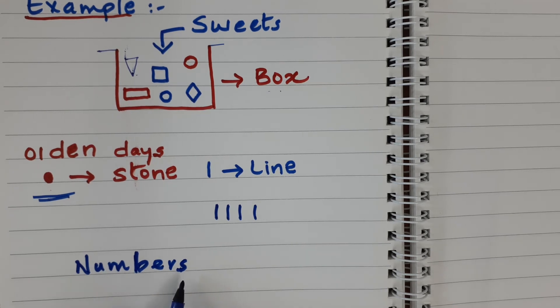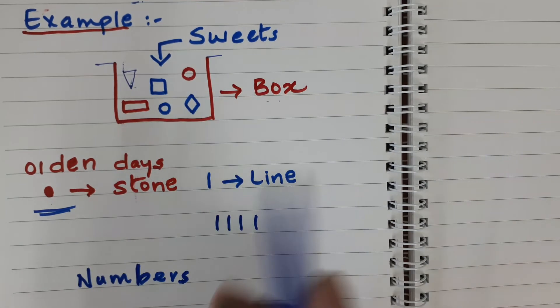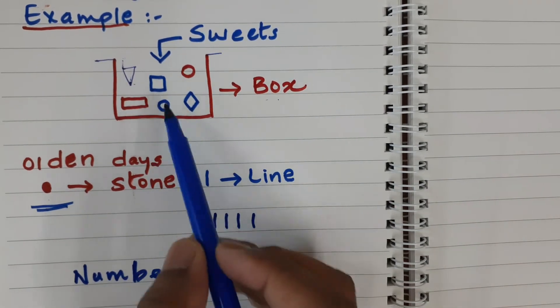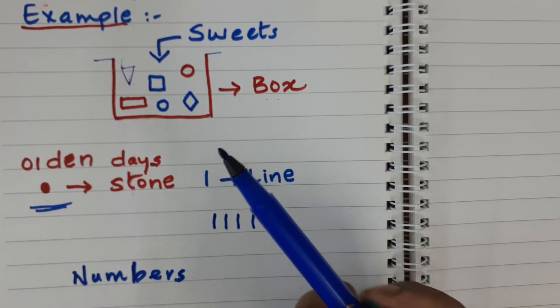So, mathematicians invented numbers. By using these numbers, we can count how many things are there. Now, in this box we have 1, 2, 3, 4, 5, 6. Like this, you can easily count.